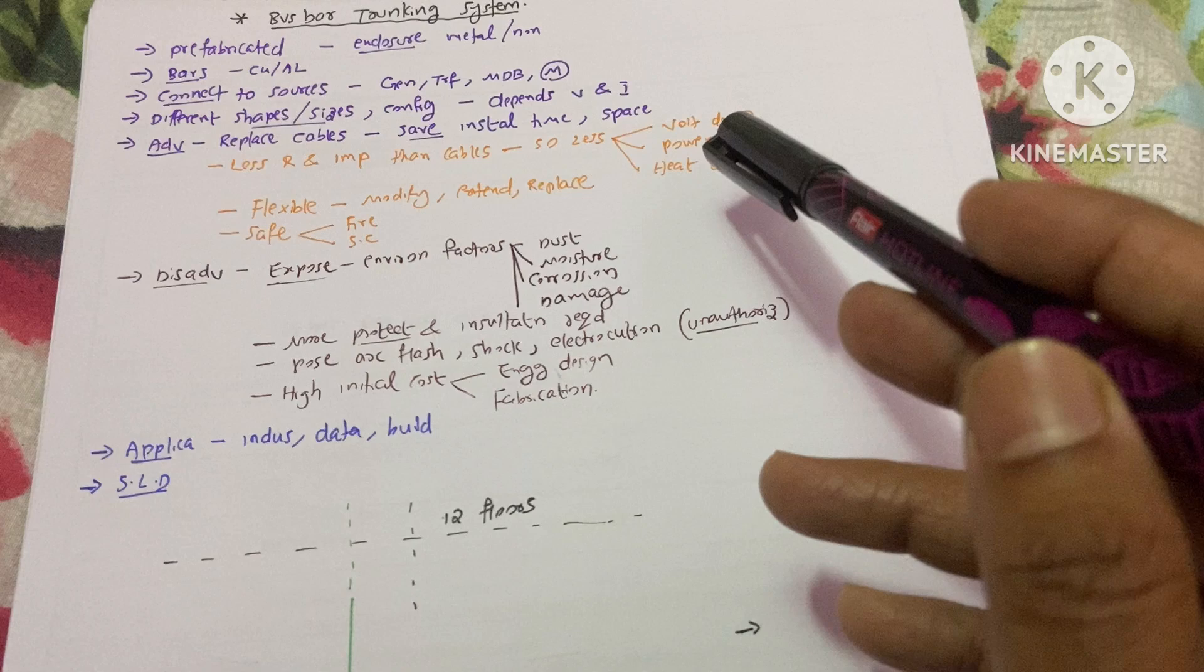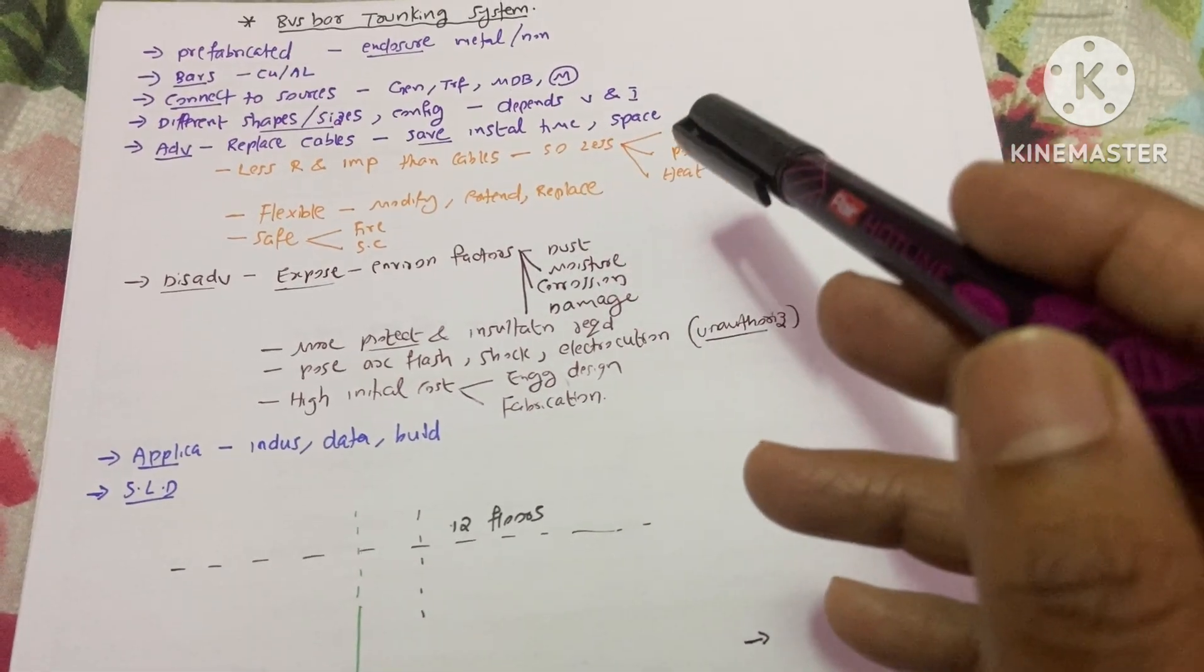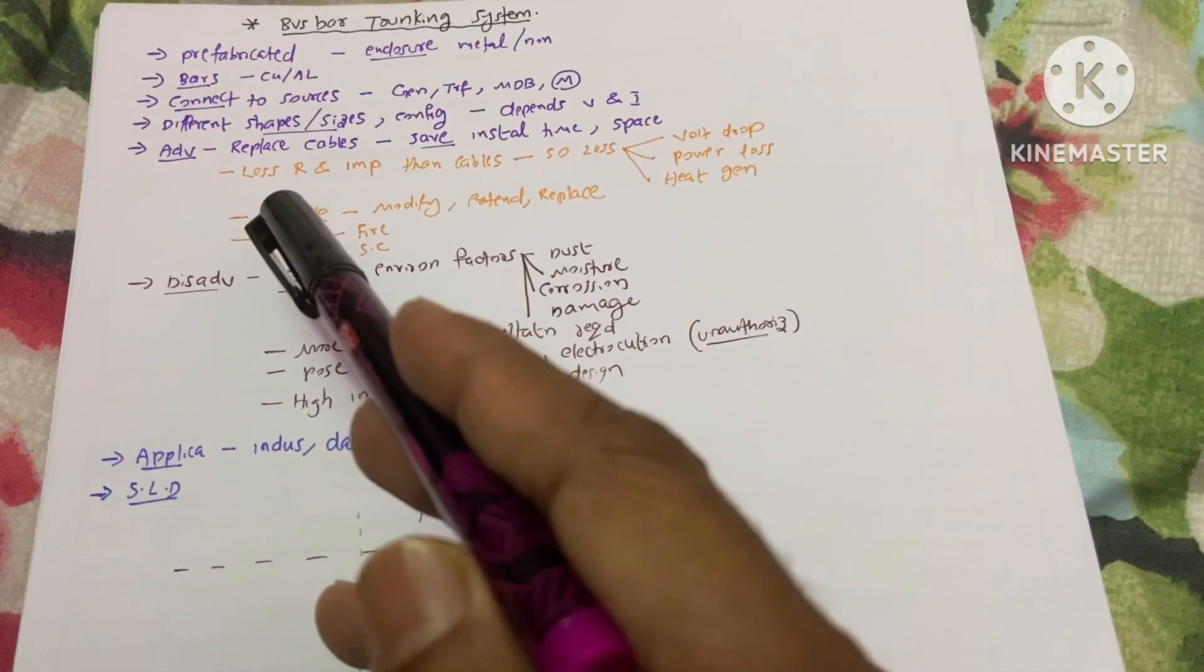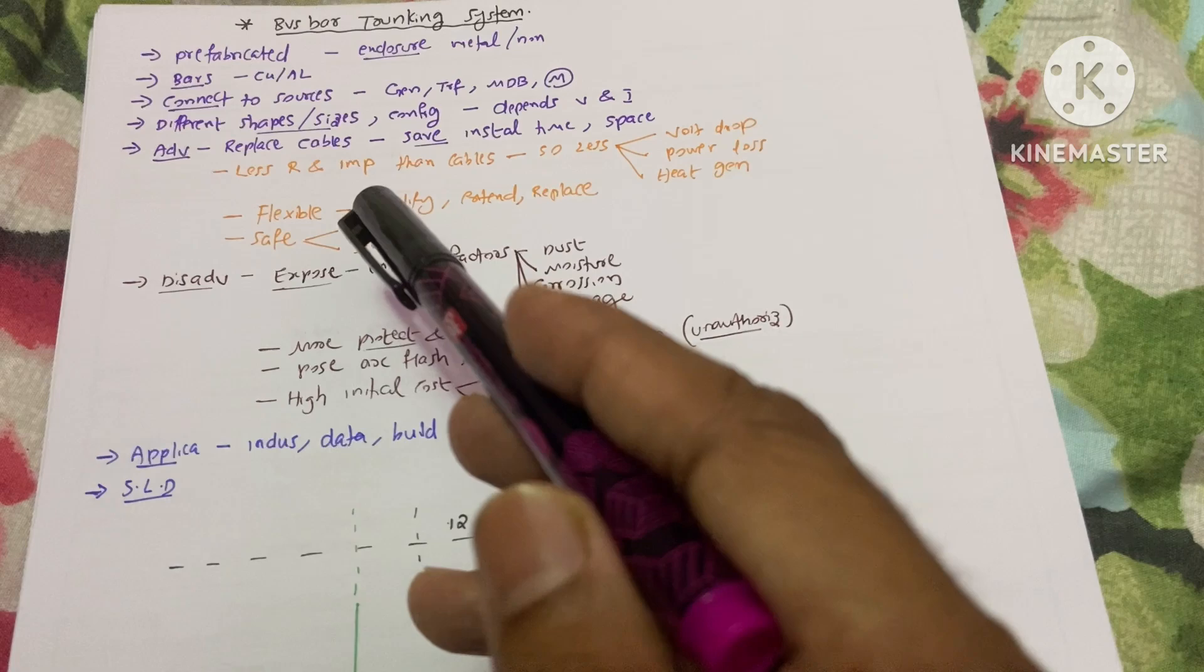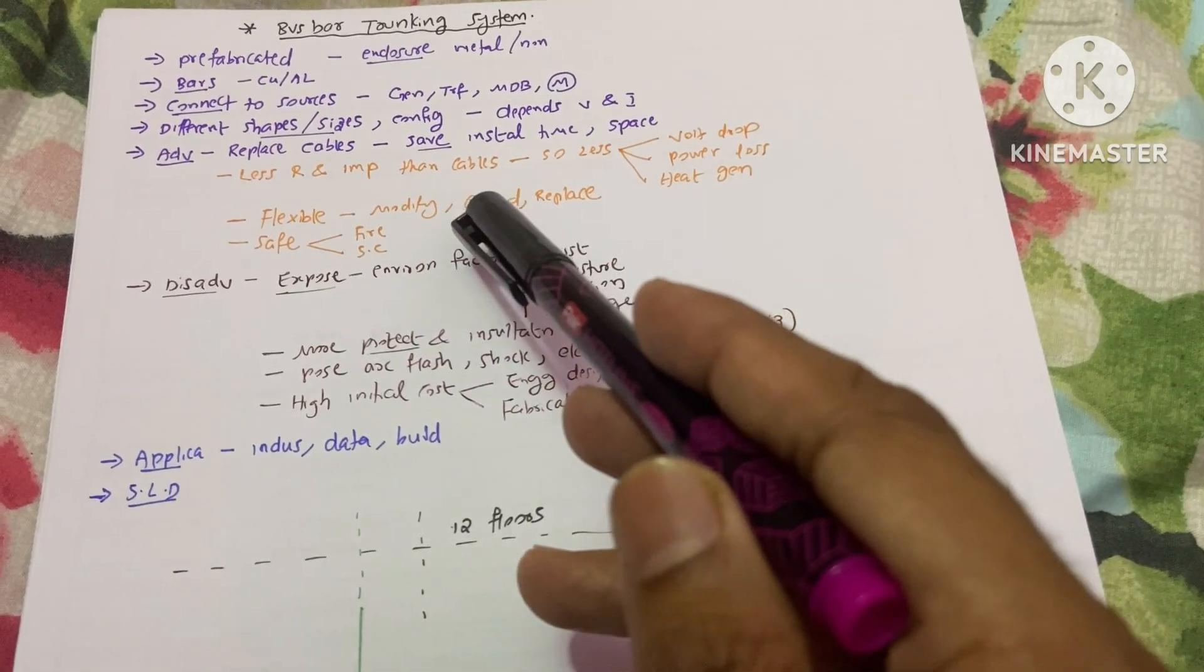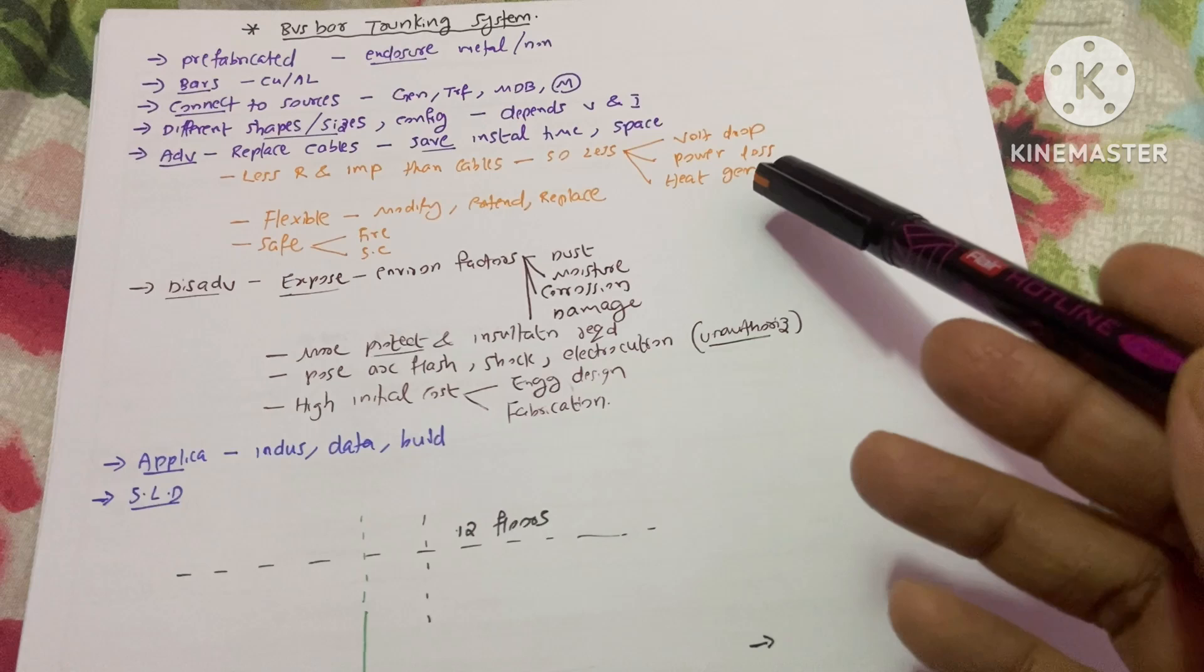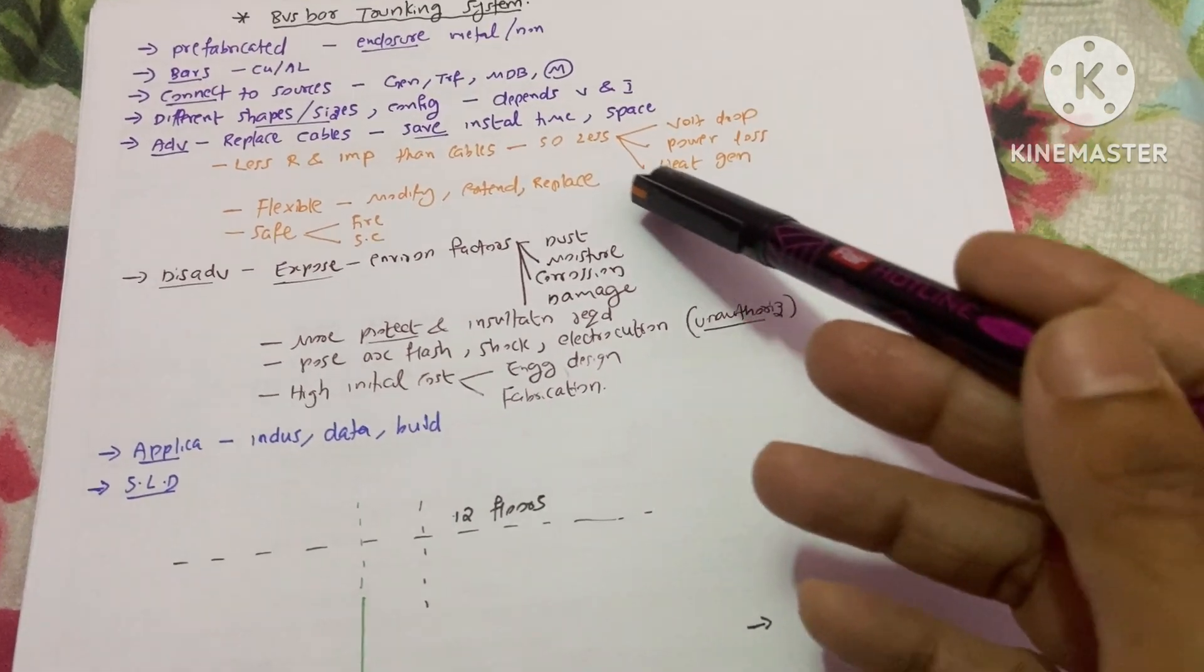But here, there is no need for that much space with the trunking system. The next advantage is there is less resistance and impedance when compared to cables. Due to that, there is less voltage drop, power loss, and heat generation. If you use cables, you would face all these problems much more.